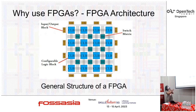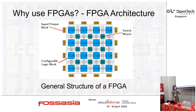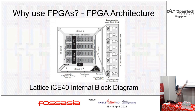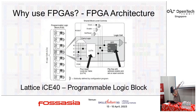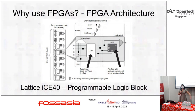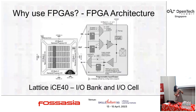This is a general structure of FPGAs. You have a bunch of configurable logic blocks, and on the sides of the chip you have your input-output blocks. You may also have other blocks like memory and multipliers in between. In a specific FPGA device, this is a general overview of how an FPGA looks. Each of these PLBs are your programmable logic blocks.